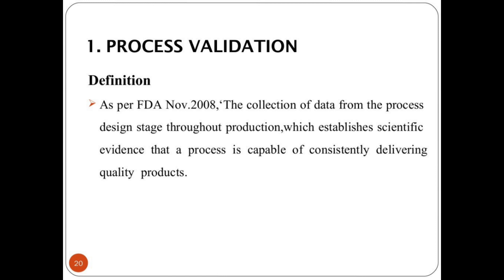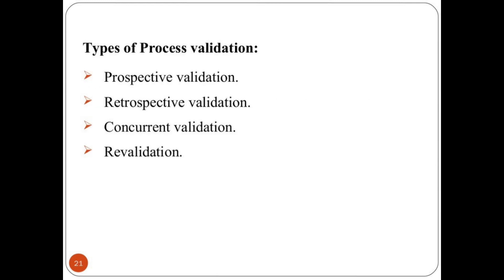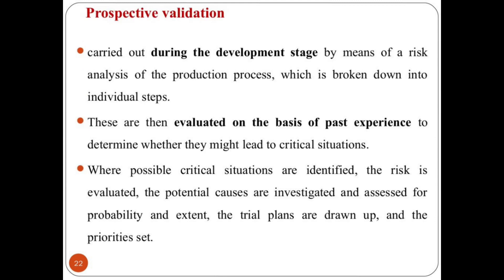First is process validation. As per FDA, it is the collection of data from the process design stage throughout production, which establishes scientific evidence that a process is capable of consistently delivering quality products. Types of process validation include prospective validation, retrospective validation, concurrent validation, and revalidation.